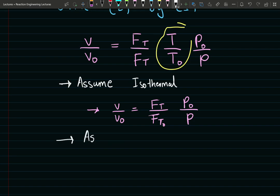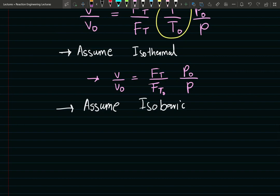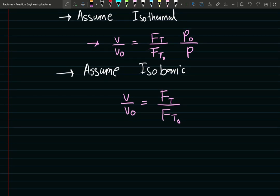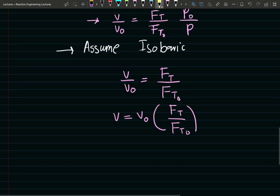Next up, if we assume isobaric, no pressure drop, then our equation becomes even more simple. V over V naught is equal to the ratios of the outlet total molar flow rate and the inlet total molar flow rate. And this can be rearranged as V equals V naught multiplied by exit over inlet total molar flow rate. Now we need an analytical expression that captures this fraction.